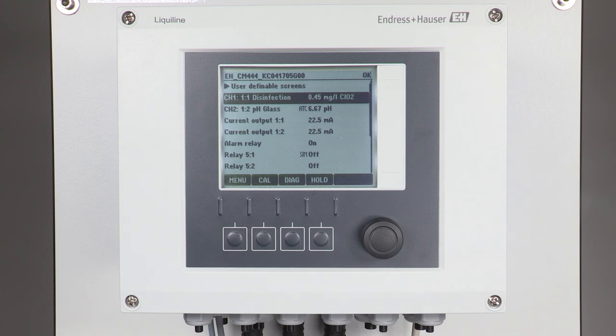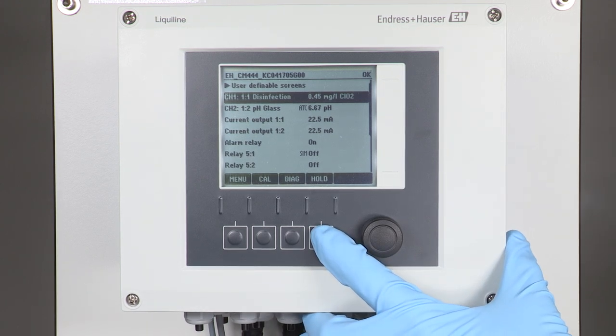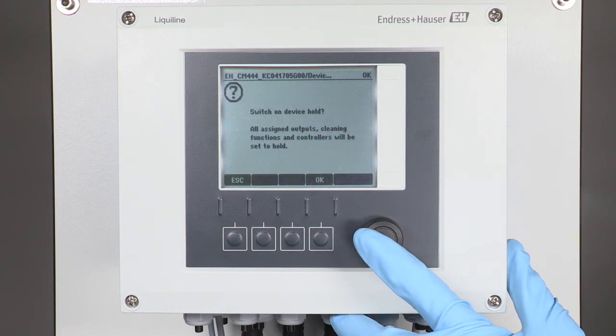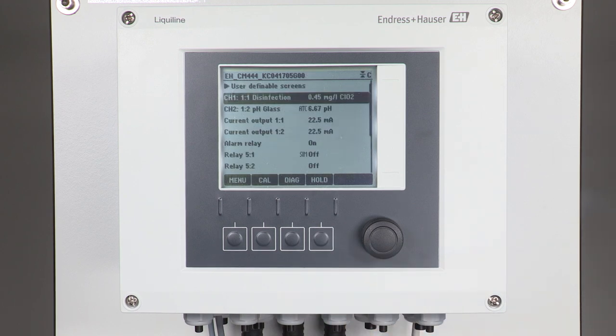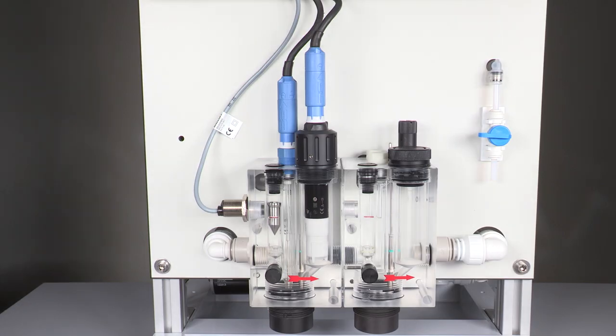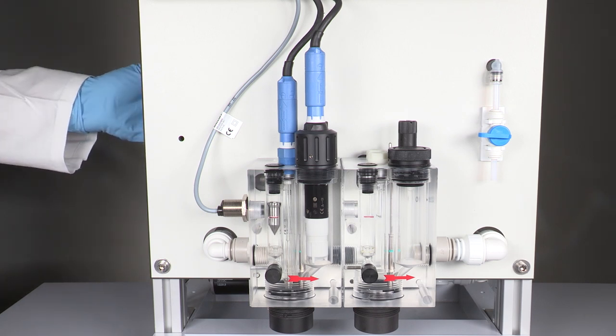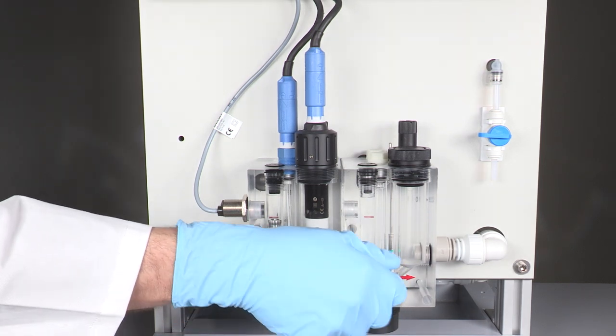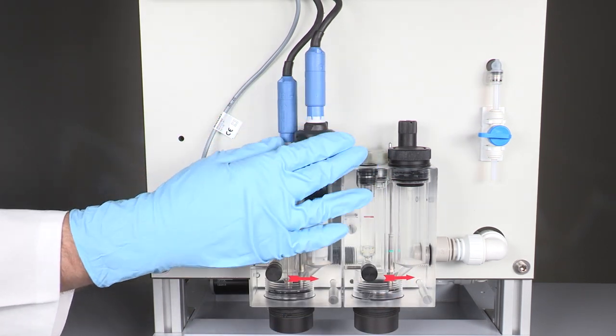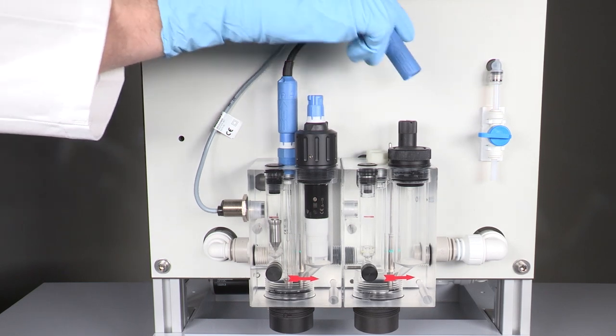Let's start with the maintenance. First we have to remove the sensor from the process. To perform this action, set the transmitter on hold and shut down the water flow. Then you can take the sensor out of the assembly.